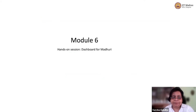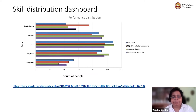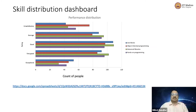One of the first things we looked at was the skill distribution dashboard. Looks like Madhuri wanted four different skills: Java basics, object-oriented programming, advanced libraries, and hands-on programming. And we looked at people from five ratings which came out of the assessment — unsatisfactory, average, good, very good, and exceptional.